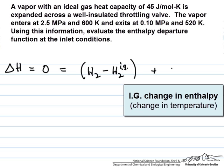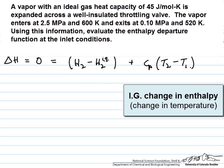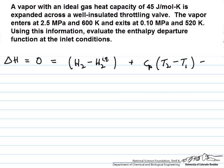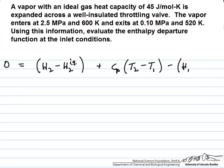But in this case we're given that the heat capacity is constant, which allows us to express this as heat capacity times the temperature difference from the outlet to the inlet conditions. Then finally we subtract off the departure function of the inlet conditions, and all of these terms should equal zero.